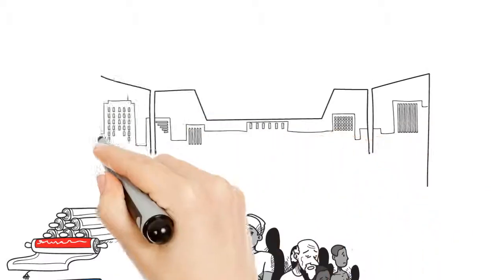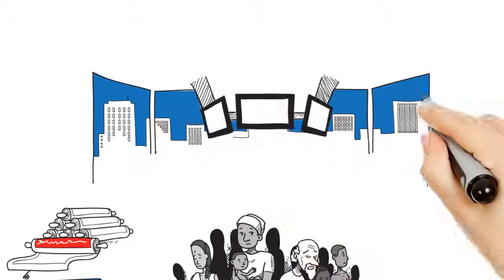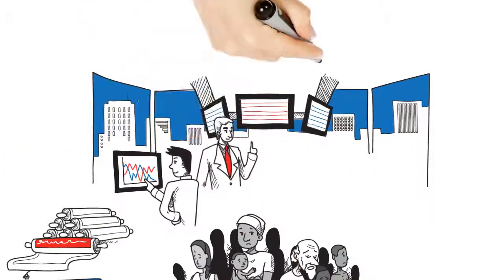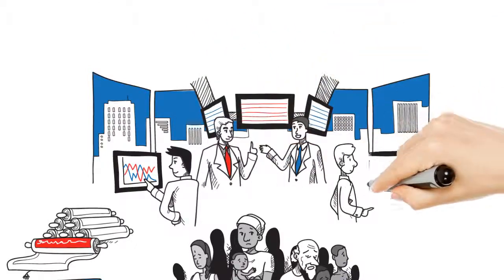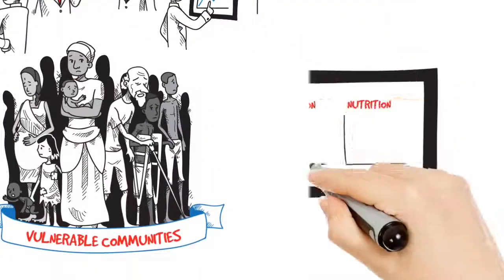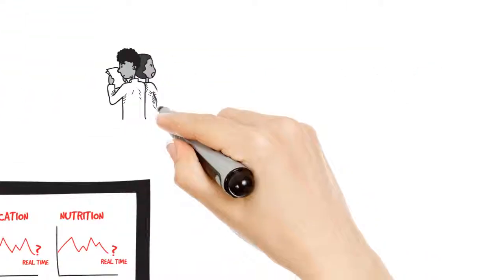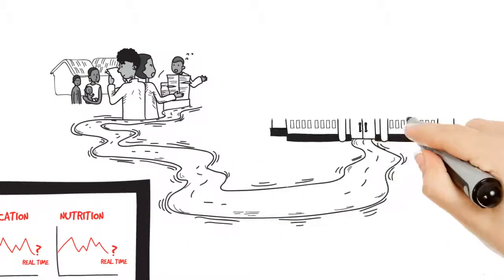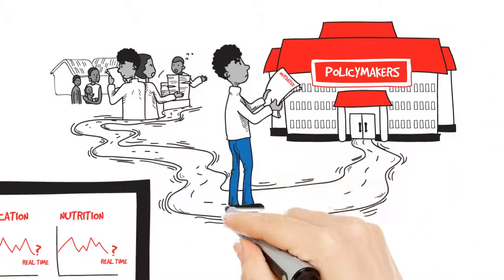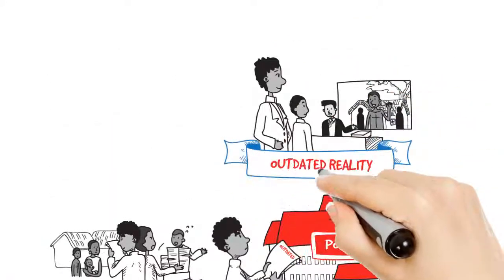Every day, volumes of data are produced to track the financial and economic health of countries. Yet there is no such information to monitor the health of vulnerable populations. What little we do know from censuses, surveys, and national statistics is lagged, which paints a distorted picture.